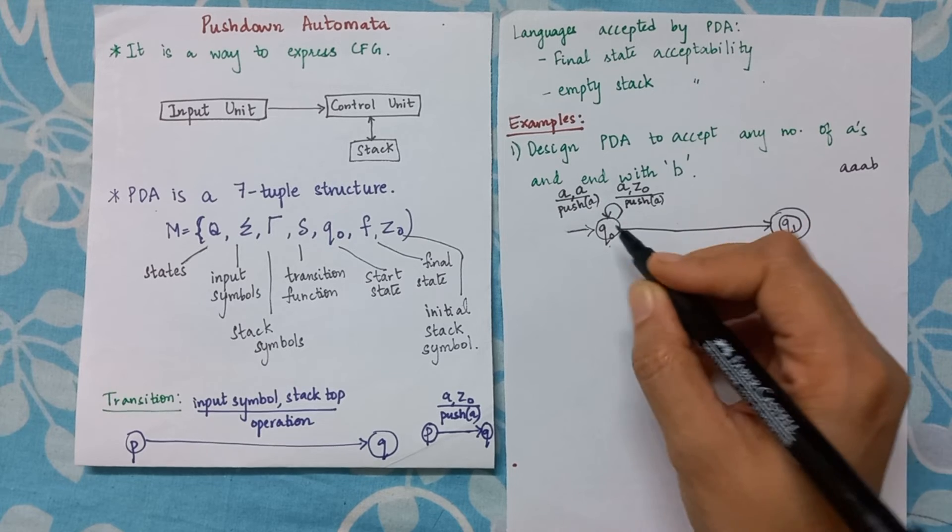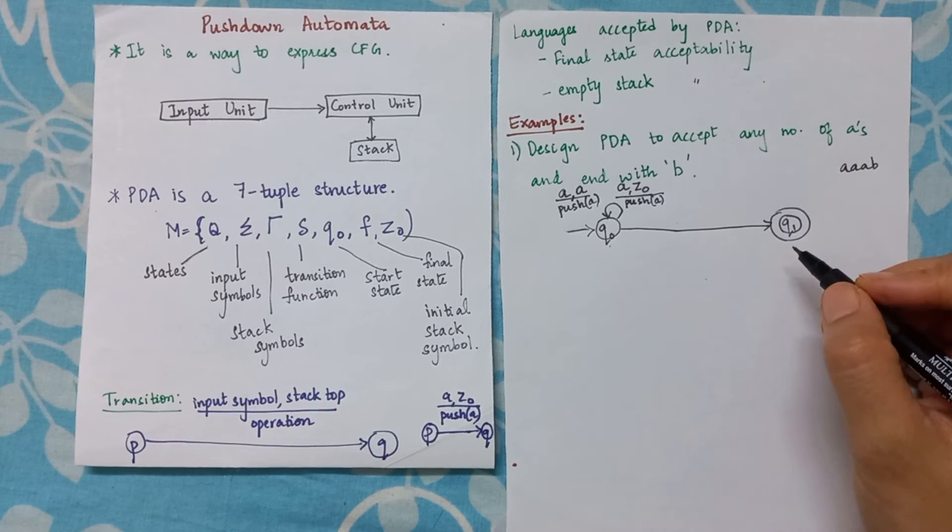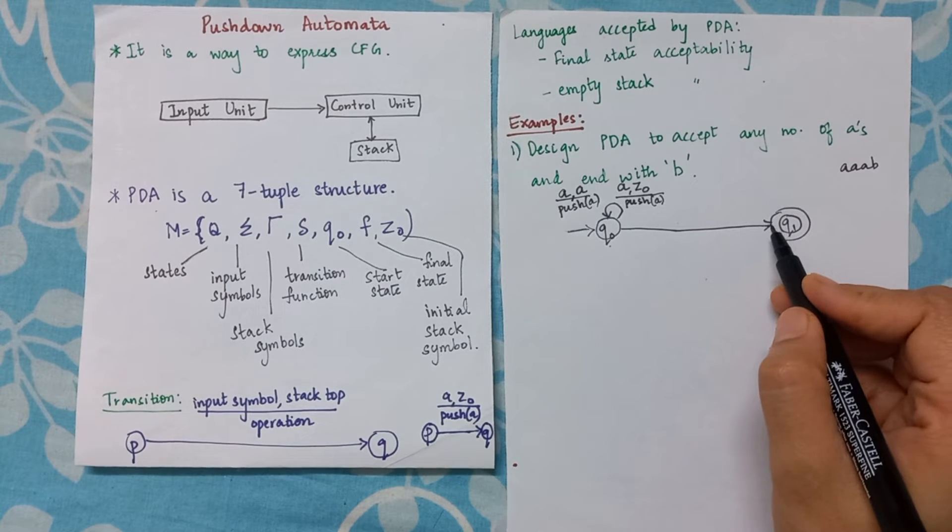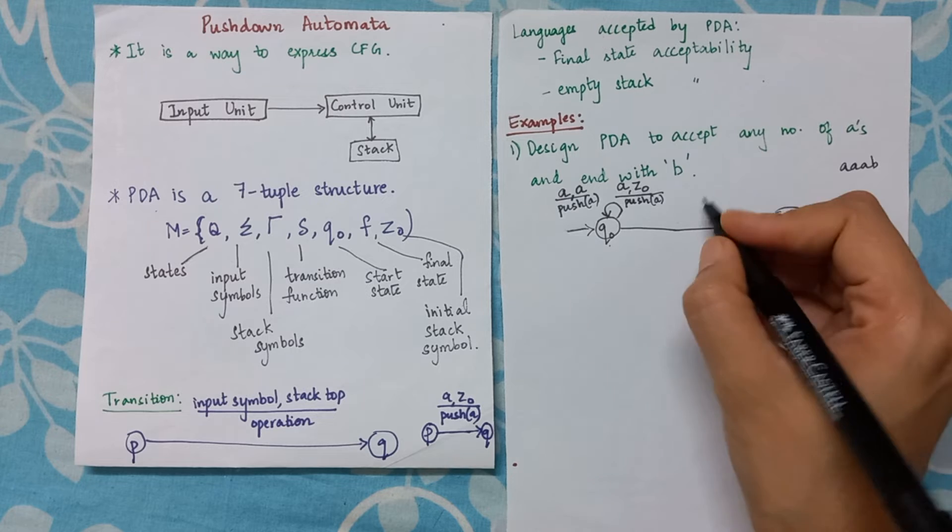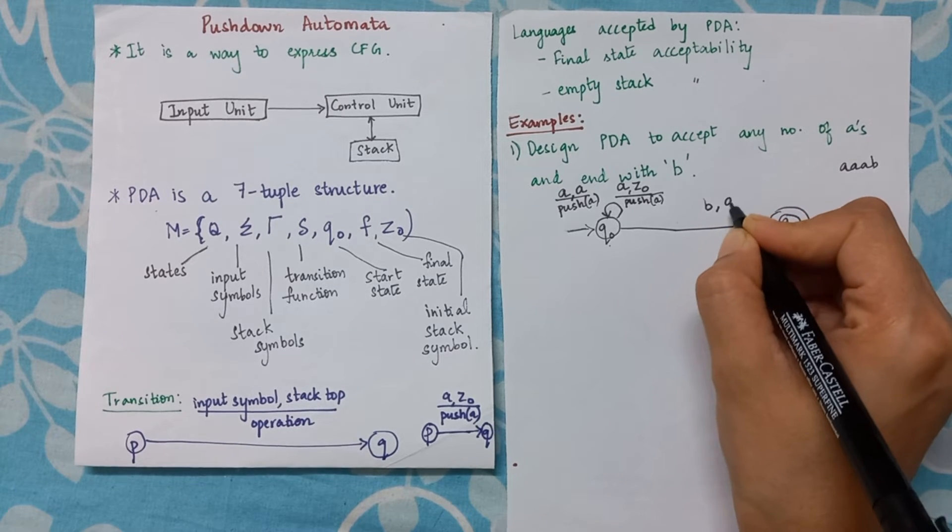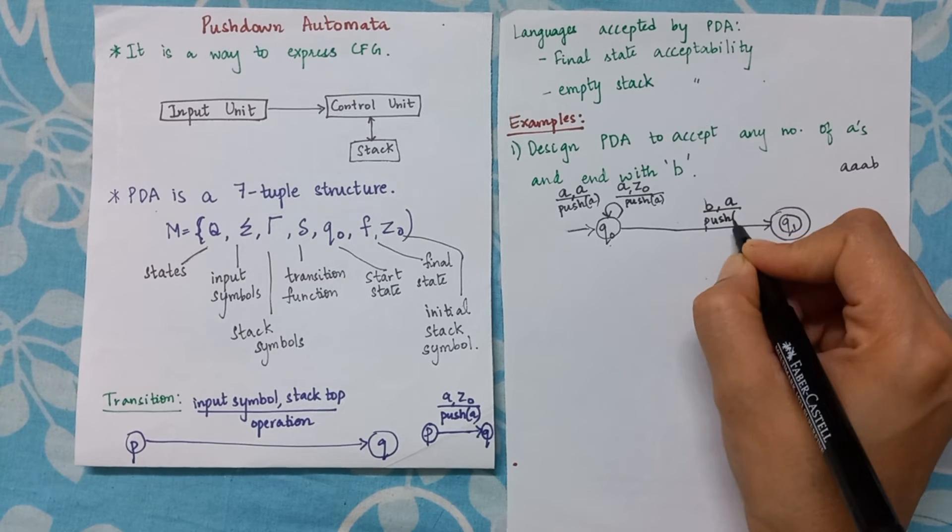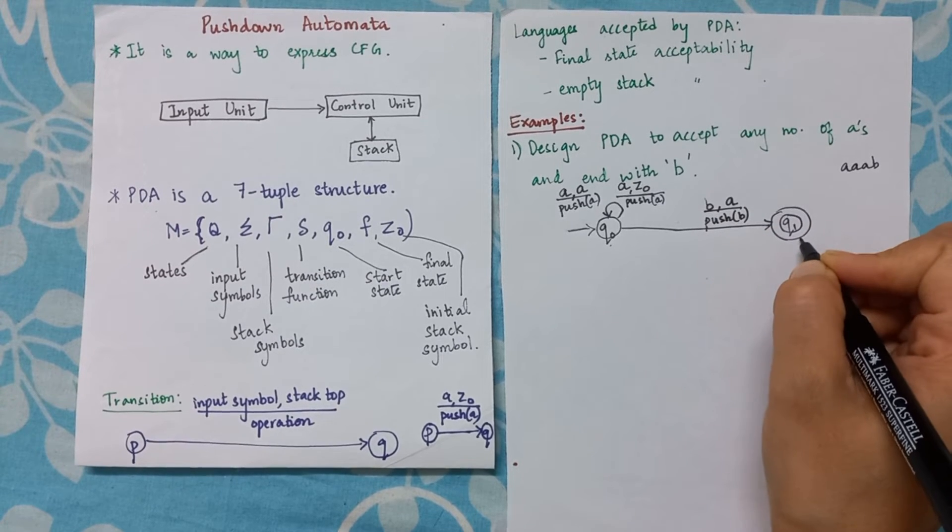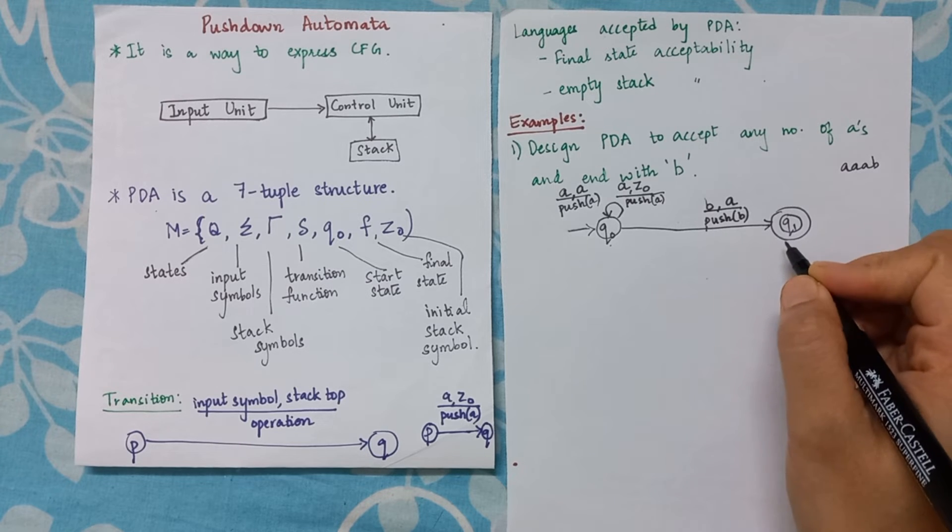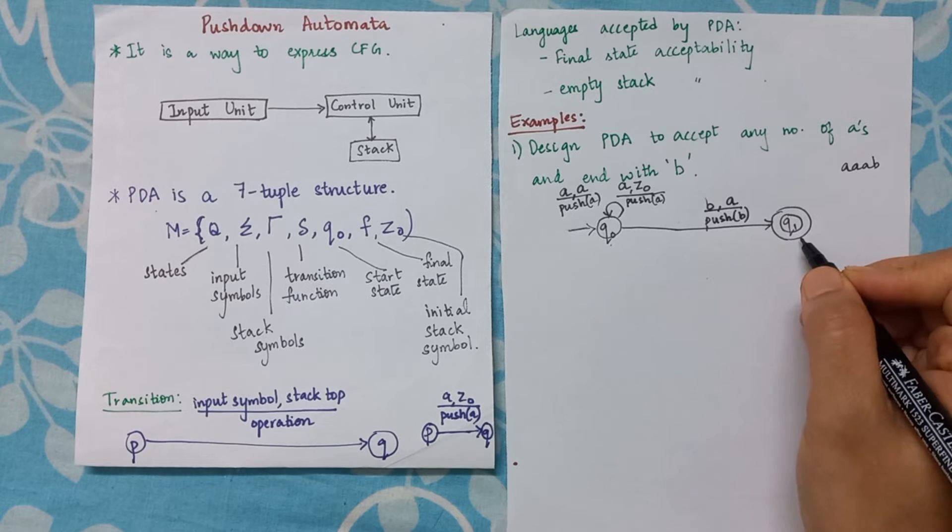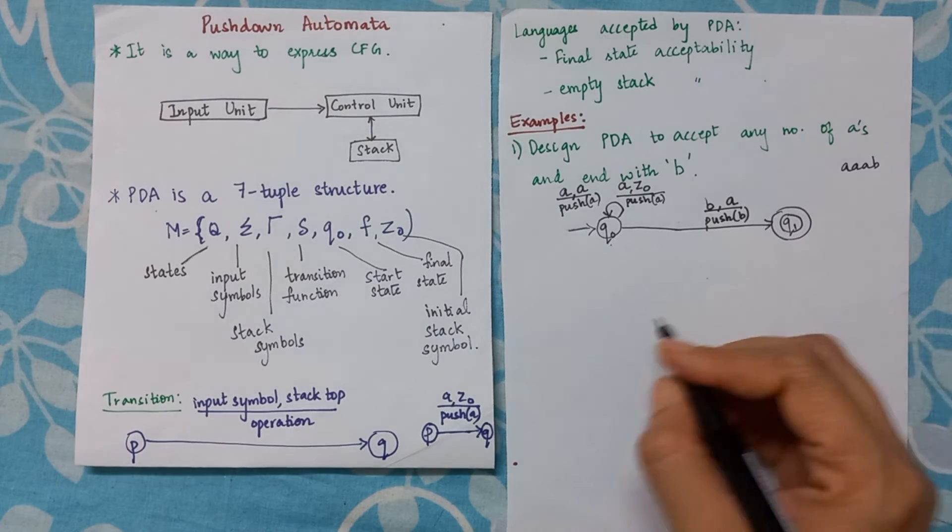Only if I reach 'b', that is 'b' with 'a' as the stack top, and I push 'b' onto the stack, so I'm reaching the final state. So in that case the string will be accepted by PDA. So now let us consider an example here.